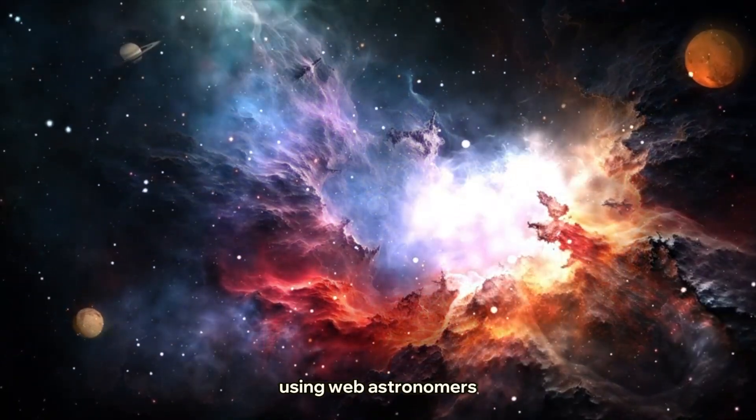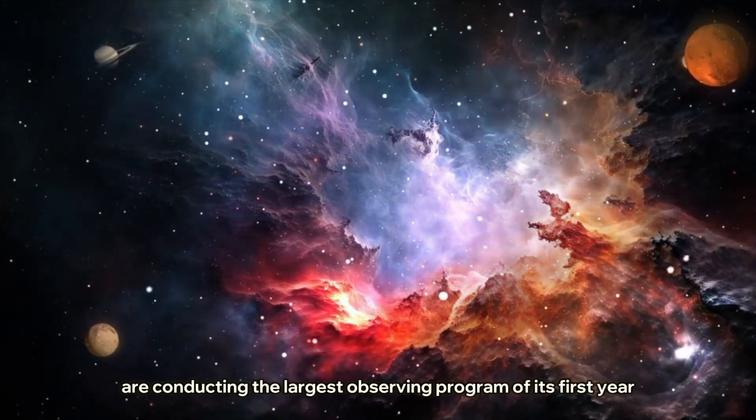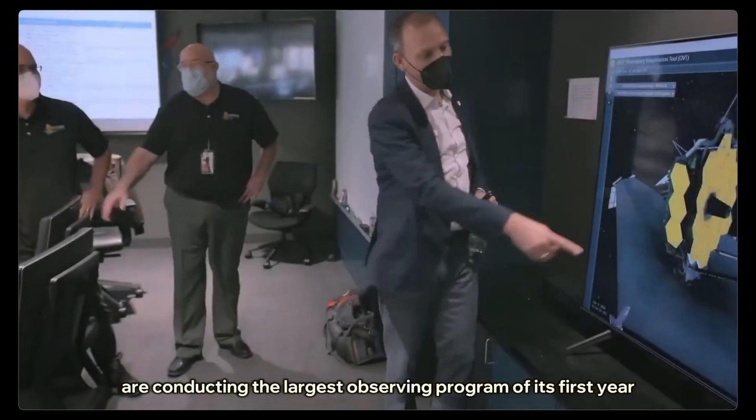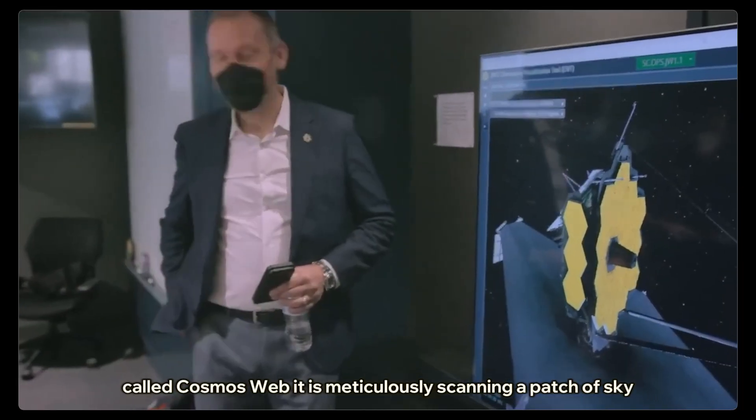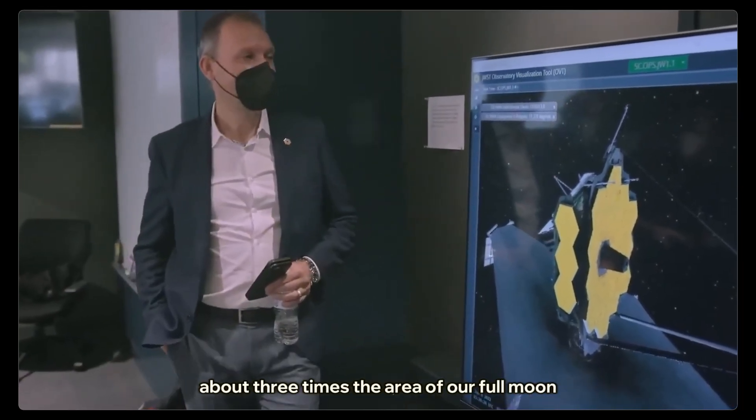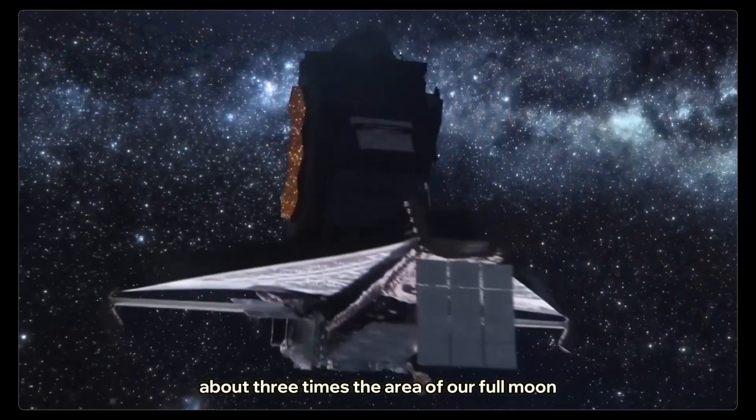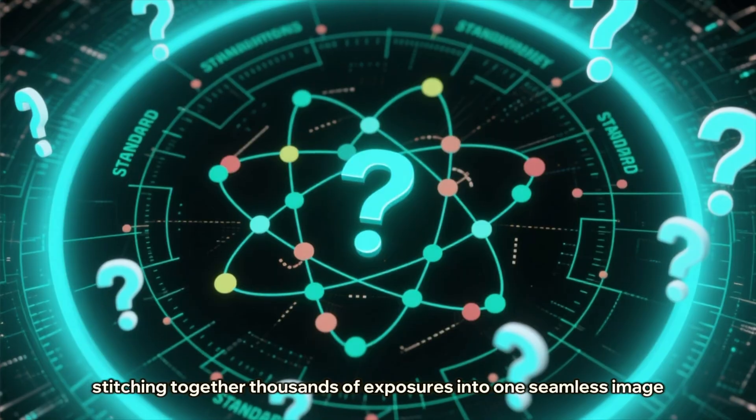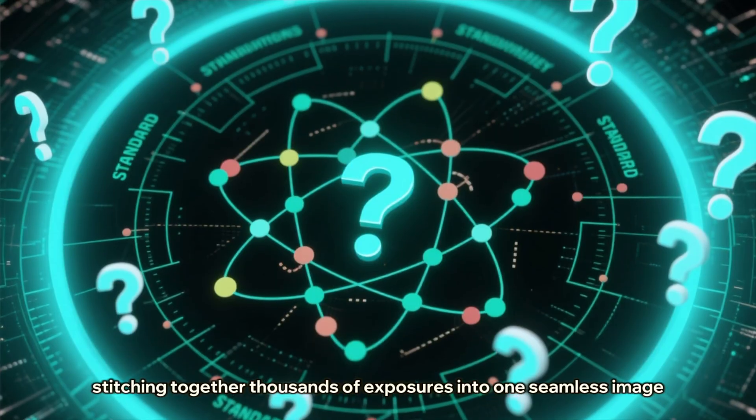Using Webb, astronomers are conducting the largest observing program of its first year, called Cosmos Web. It is meticulously scanning a patch of sky about three times the area of our full moon, stitching together thousands of exposures into one seamless image.